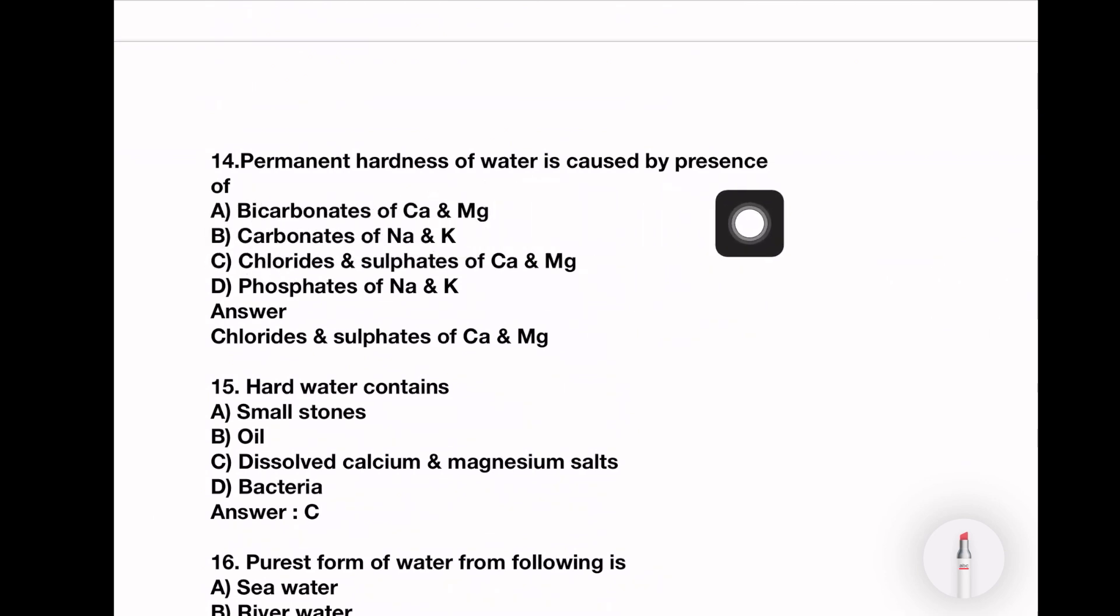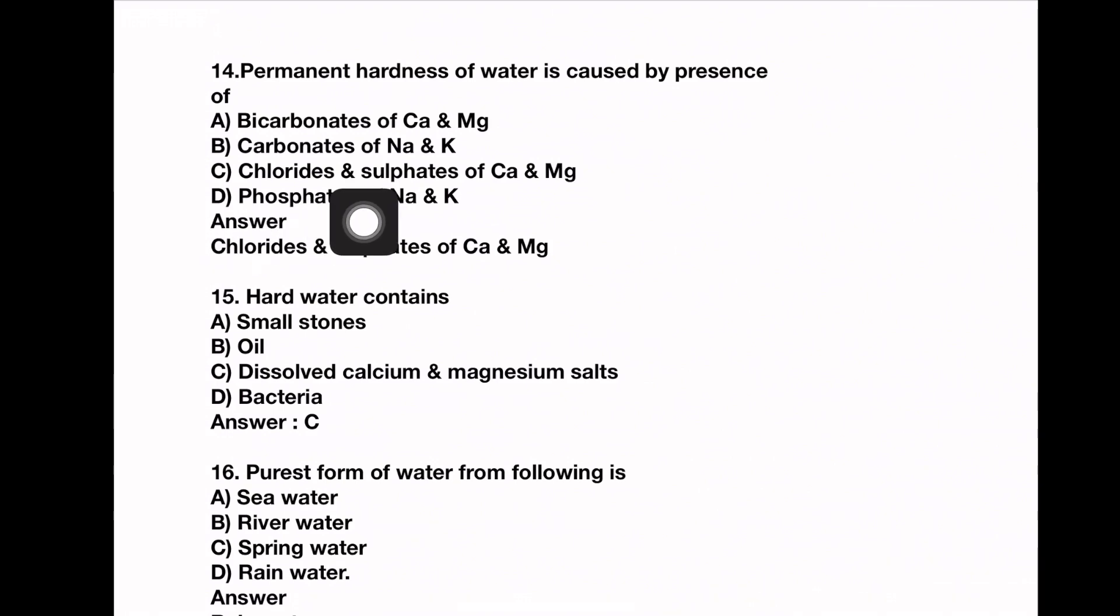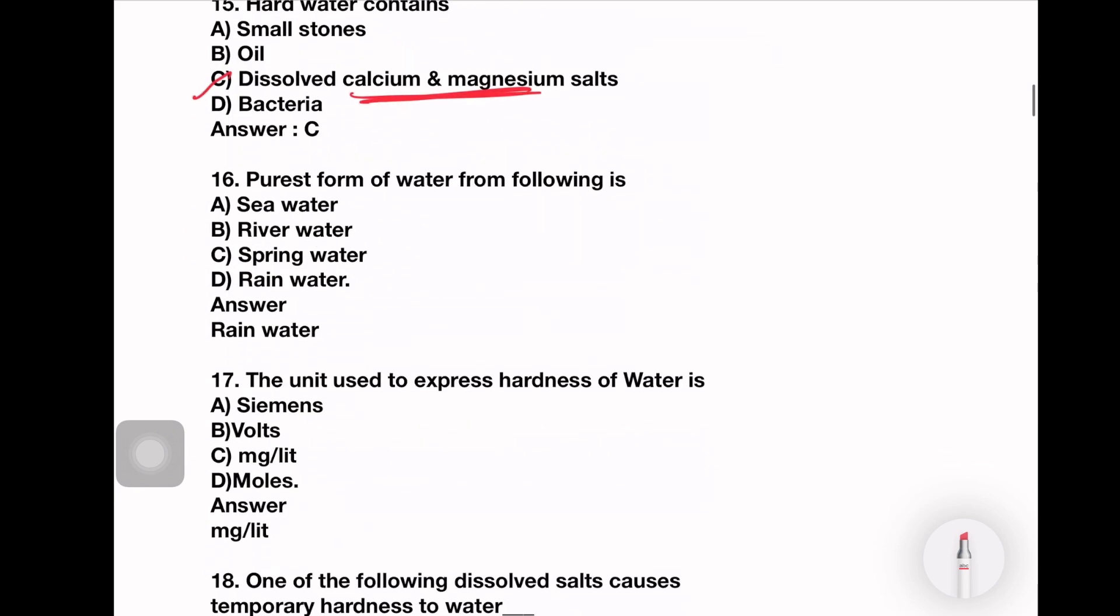Permanent hardness of water is caused by presence of what? So what is permanent hardness? Bicarbonates vs chlorides and sulfates. Calcium chloride. It is permanent hardness. Hard water contains calcium and magnesium salt. If we have calcium and magnesium in bicarbonate form, it is temporary form. In chloride sulfate form, it is permanent form.